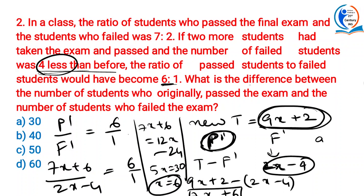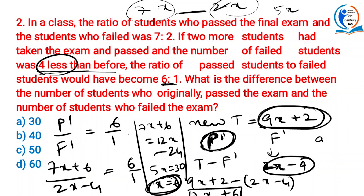Now, what are they asking? The difference between the number of students who originally passed and failed. We took 7x and 2x for passed and failed. With x = 6, the difference is 7x − 2x = 5x = 5 × 6 = 30. So A is the answer.